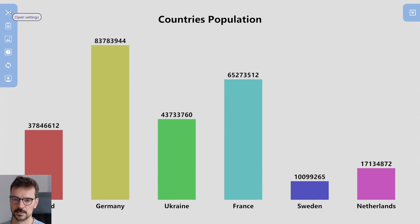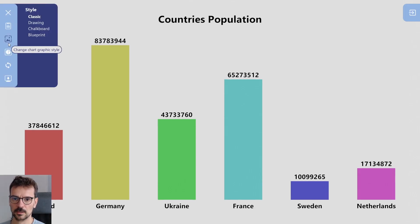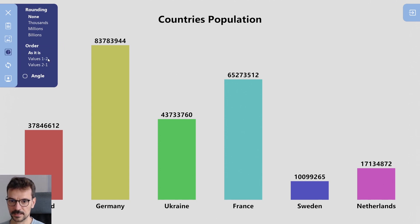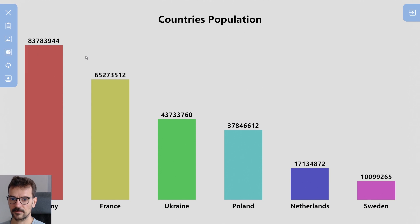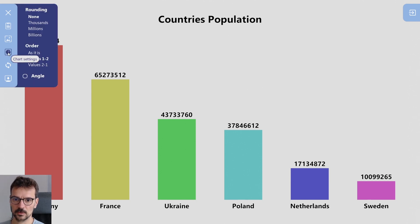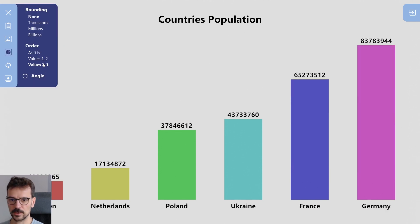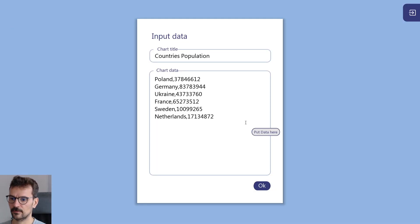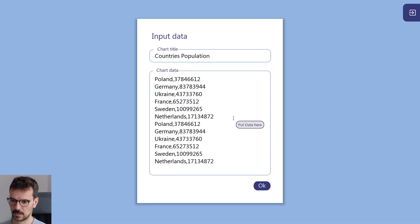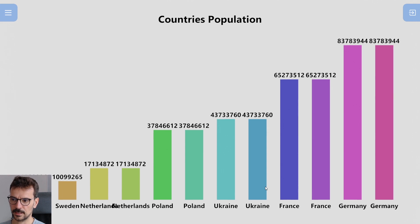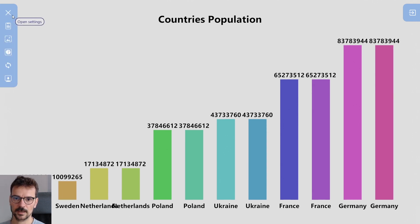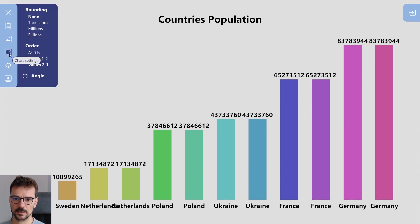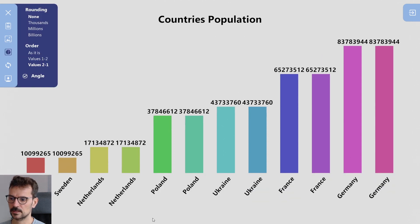And here you go — the charts. You can change some types and settings here, like you can set up the values from biggest to smallest or the other way around. And if you have more countries or more data with more values, you'll see the names are overlapping, like Netherlands down there.